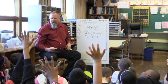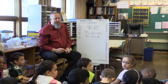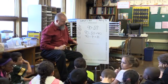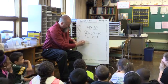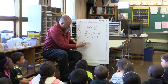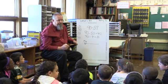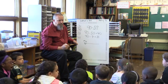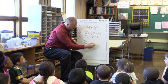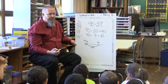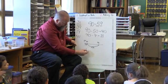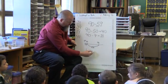Who has a different way of doing it? Sandra, you used a number line. How did you do it? I started at 59, and I added 1 to get to 60, then I added 30 to get to 90. Then you added your jumps: 1 plus 30 equals 31.